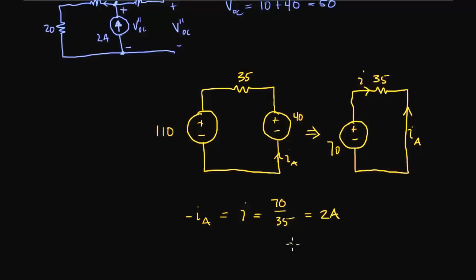And so IA is equal to negative 2 amps. And that's the solution to that problem.